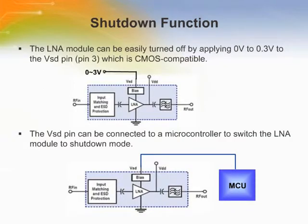The LNA module incorporates a shutdown circuitry that is beneficial for portable devices which have limited battery life. If the module is in shutdown mode, the current consumption is less than 0.1 microampere and the forward isolation is approximately 17 dB. The LNA module can be easily turned off by applying 0 to 0.3 volts to the VSD pin, which is CMOS compatible. The VSD pin can be connected to a microcontroller to switch the LNA module to shutdown mode when not needed, in order to extend battery life.